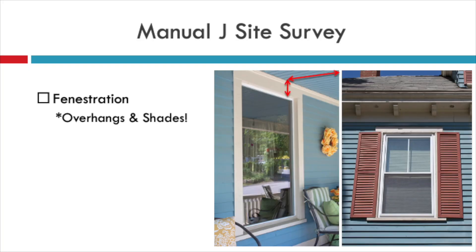For overhangs, you want to measure the height above the window to the overhang and then how far in feet the overhang hangs over that window. If it's not a two-to-one ratio or more, it's not going to provide shading. As you can see in this picture, there's a huge porch on the front side of my house — way more than a two-to-one ratio. Juxtapose that with my daughter's bedroom taken at noon: that little bit of soffit hanging over is not providing shading. It does not have a two-to-one or more ratio, so we don't include it in the load calculation.